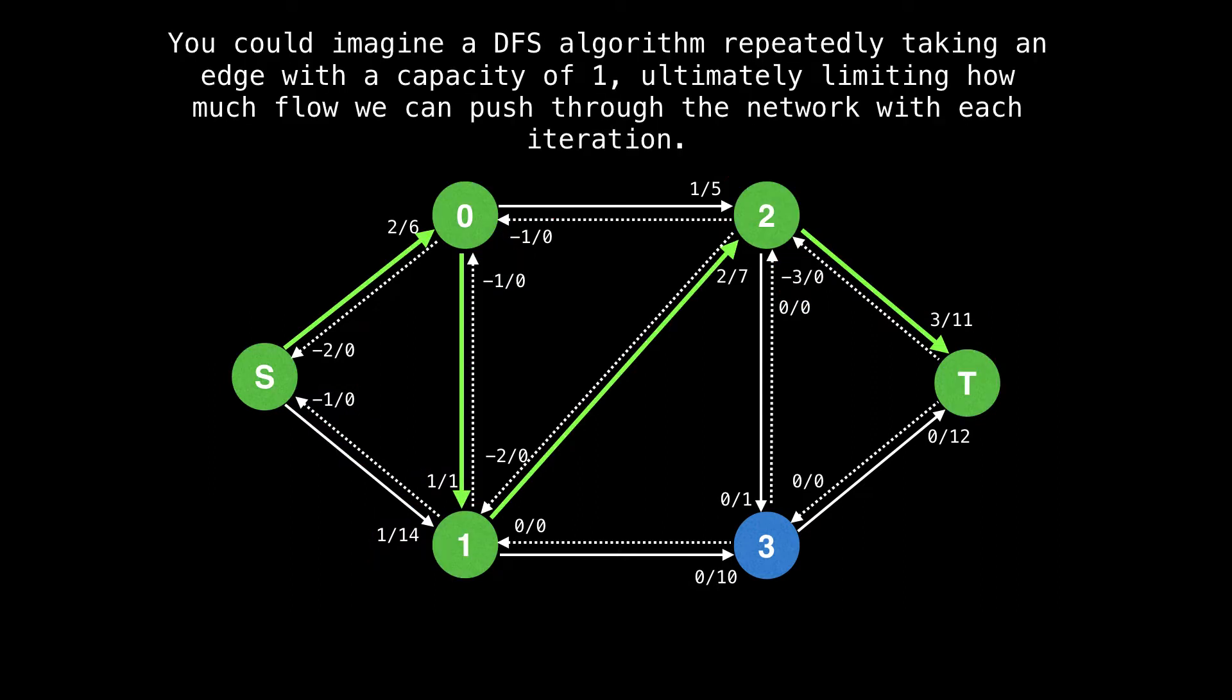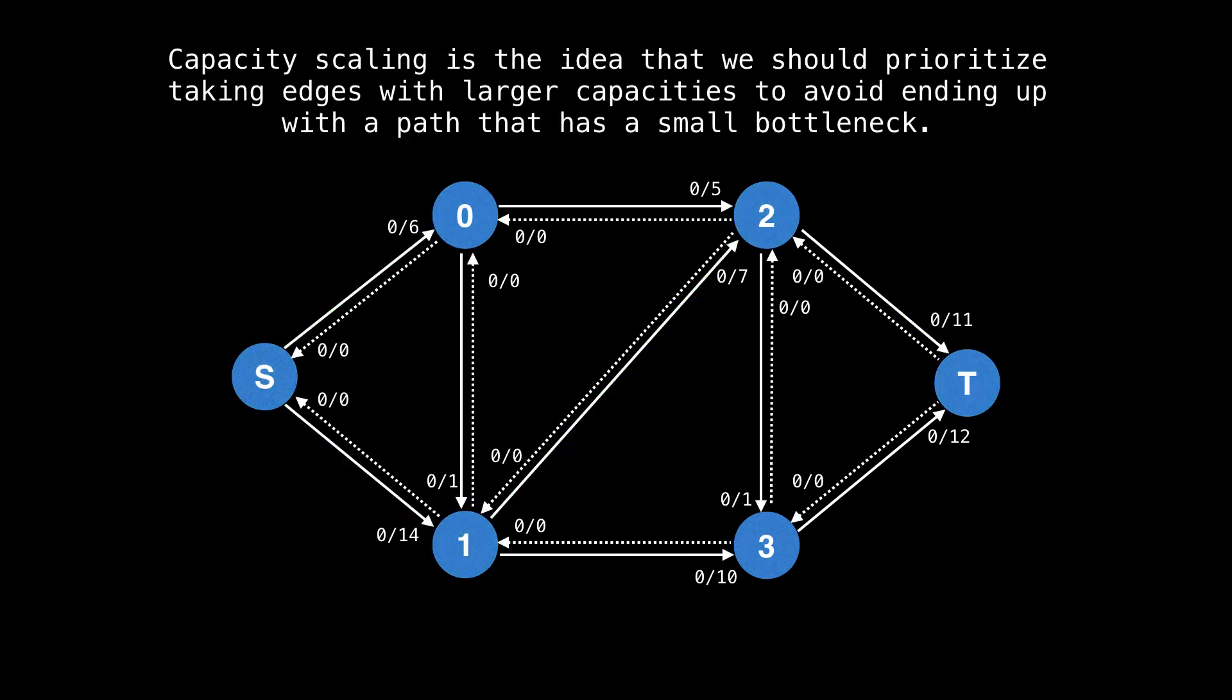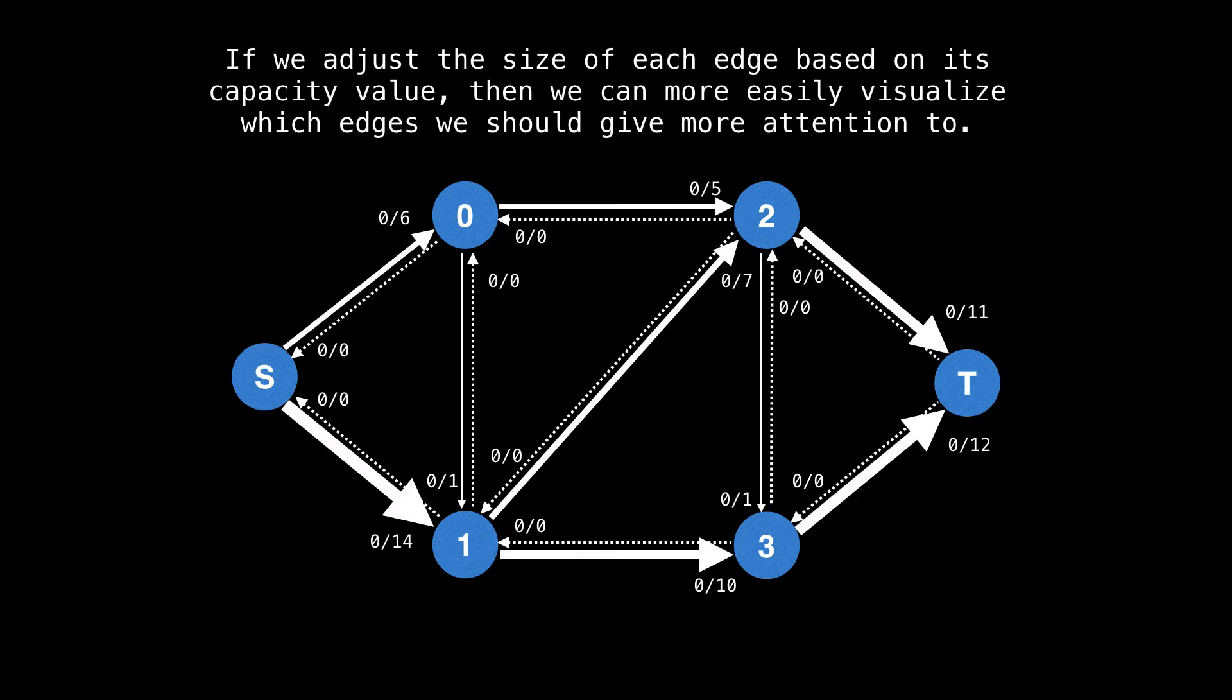You could imagine the depth first search algorithm repeatedly taking an edge with a capacity value of one each time which would ultimately limit how much flow can push through the network in each iteration as shown in the next few slides. So it would look like this, we just keep alternating between the forward and the residual edge with a capacity of one. Capacity scaling is the idea that we should prioritize taking edges with larger capacities first to avoid ending up with a path with a small bottleneck. If we adjust the size of each edge based on its capacity value, then we can more easily visualize which edges we should give more attention to.